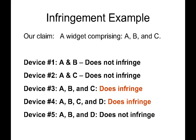In the most basic form, if we have a claim to a widget that has three elements — A, B, and C — then a competitor device must have those three elements in order to infringe our claim. Looking at our five competitor devices, we see that device 1 has only A and B, and therefore does not infringe. Device 2 has only A and C, and therefore does not infringe. Device 3 has A, B, and C, and does infringe — it has all the claim elements.